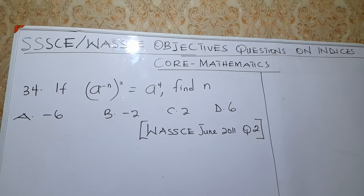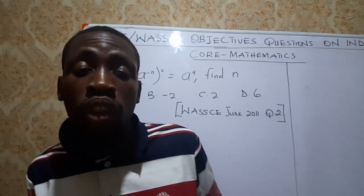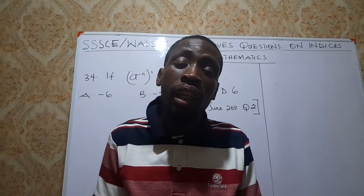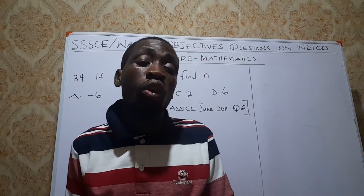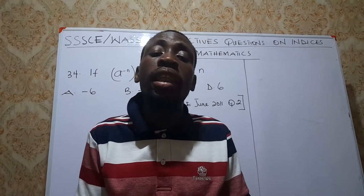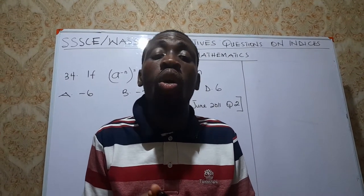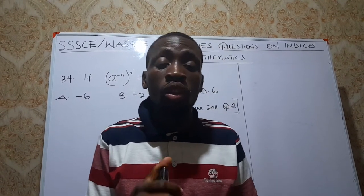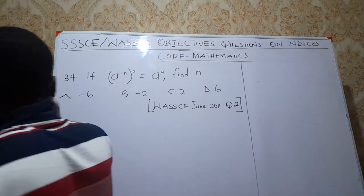In our last video, remember I told you that so far there have been 62 objective questions on indices in core mathematics from 1993 to 2021. Last time, we solved from 1993 to 2010 and we solved 33 objective questions. Please check out that video on YouTube. Today we will start from 2011, starting from objective question number 34.